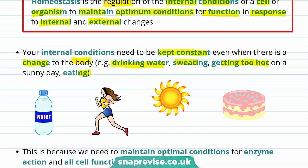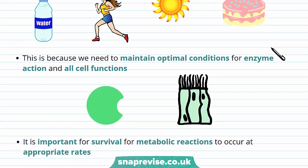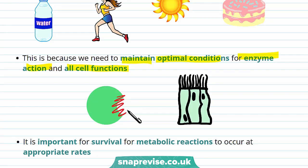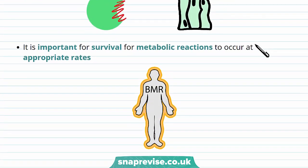Why do we have to keep internal conditions constant? We need to maintain optimal conditions for enzyme action and all cell functions. For example, the active site of the enzyme might change if it becomes denatured as the body temperature is too hot. Keeping everything constant is important for survival as metabolic reactions need to occur at appropriate rates. If the body temperature is too high, these enzymes might denature and won't be able to carry out metabolic reactions.